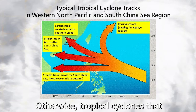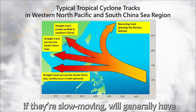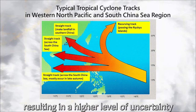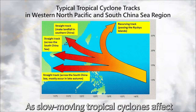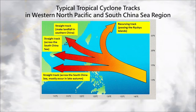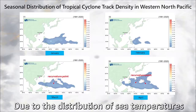Otherwise, tropical cyclones that form over the South China Sea, if they're slow-moving, will generally have more complicated and changeable tracks, resulting in a higher level of uncertainty. As slow-moving tropical cyclones affect a certain region for a longer period of time, they will generally bring more precipitation to the region.